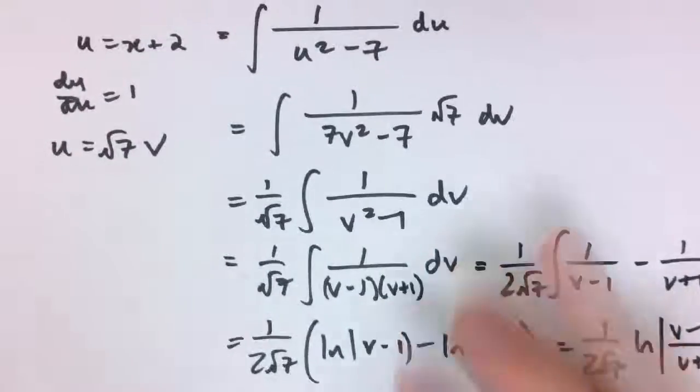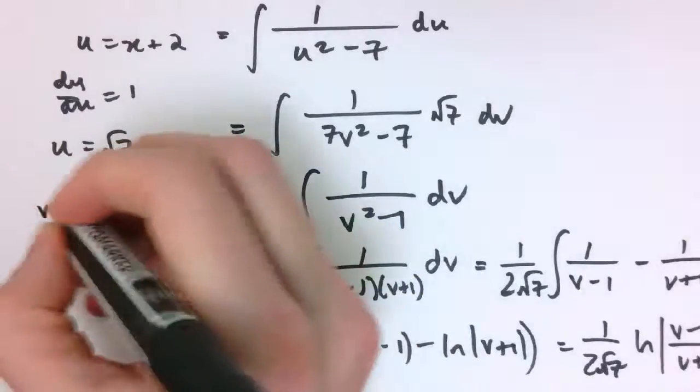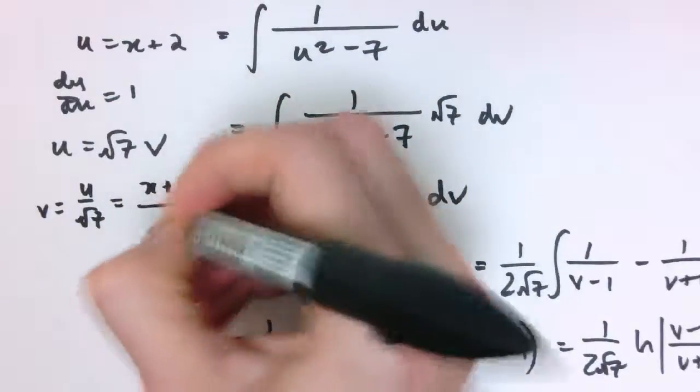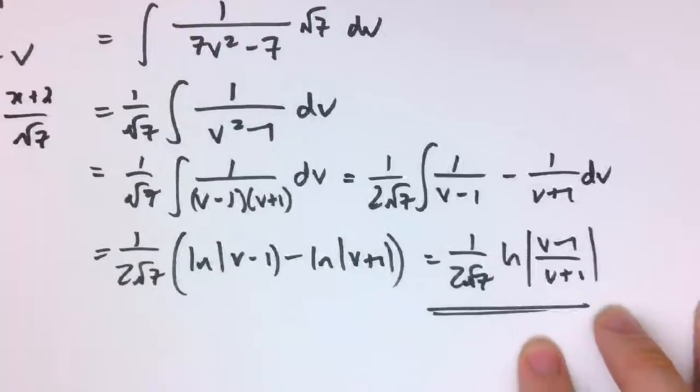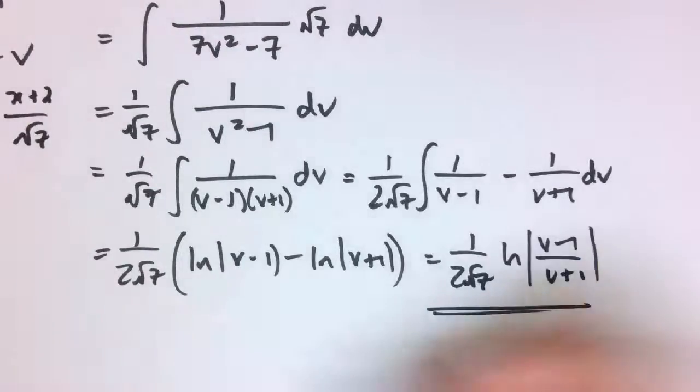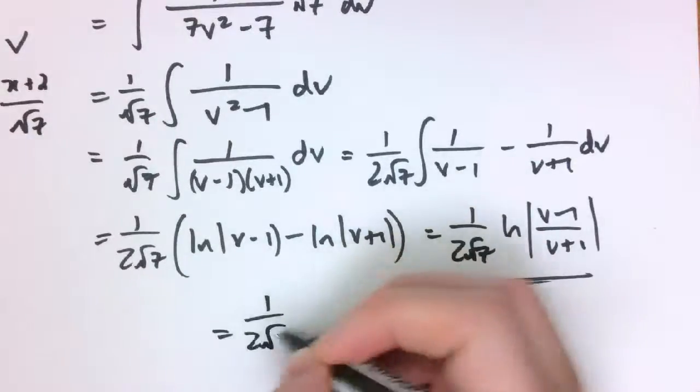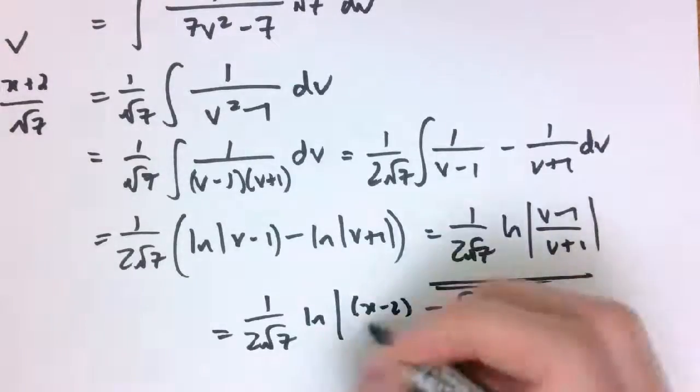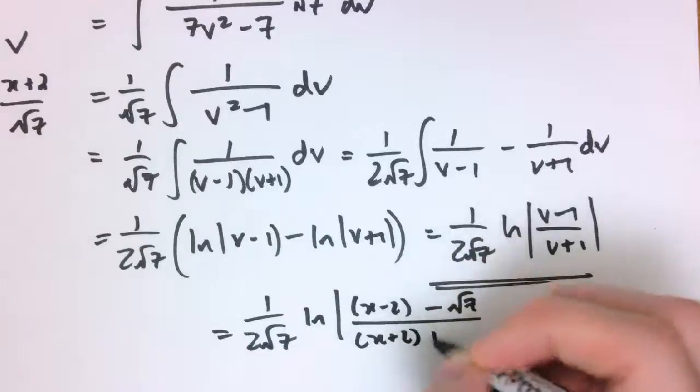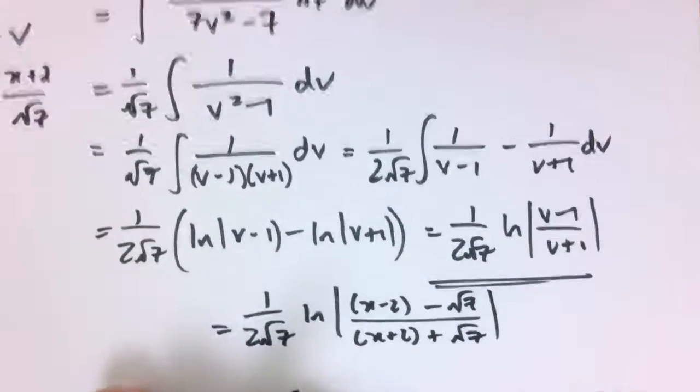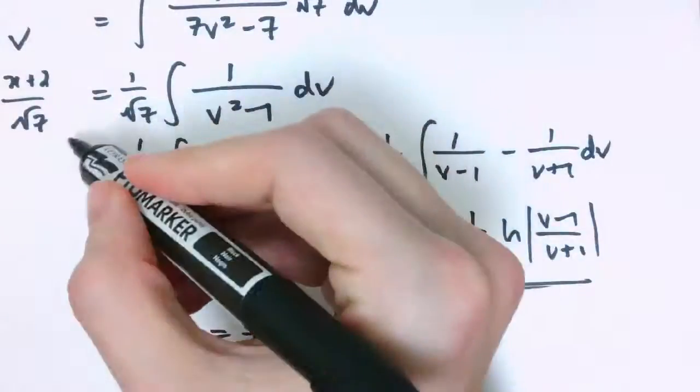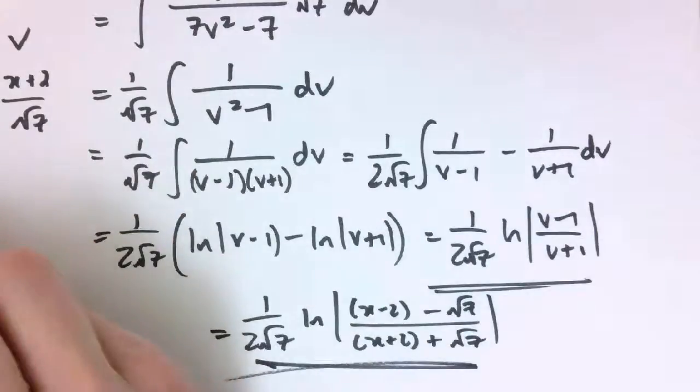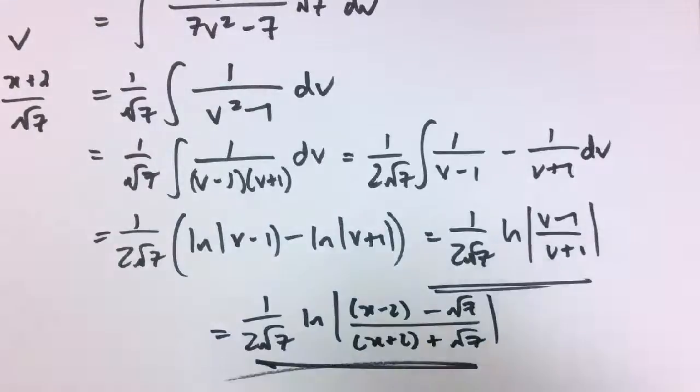So if we just unpick the substitutions we made earlier, we've got v equals u over the square root of 7, and u is x plus 2, so v is x plus 2 over the square root of 7. So if we put that in here, you can check that that simplifies down to 1 over 2 root 7, then x plus 2 minus root 7 over x plus 2 plus root 7, and the divided by root 7 from here has just been multiplied through top and bottom, so I've got my answer back in terms of x.